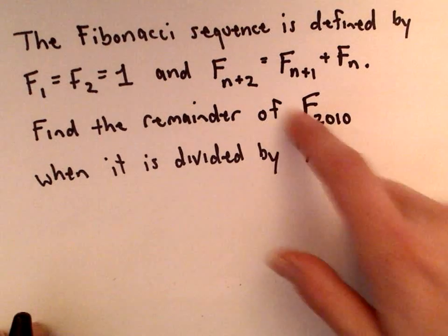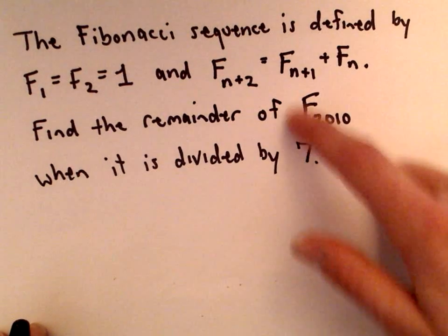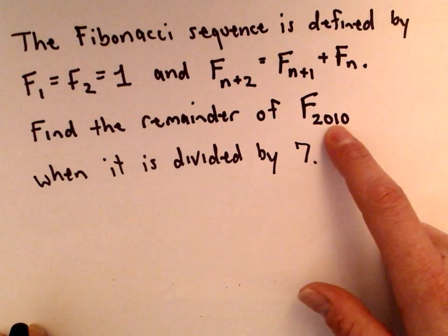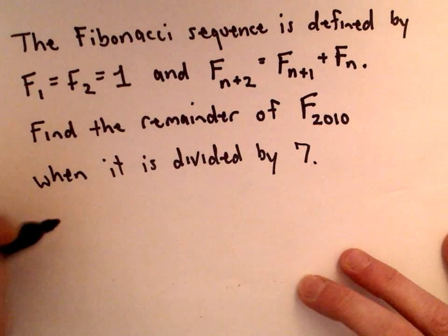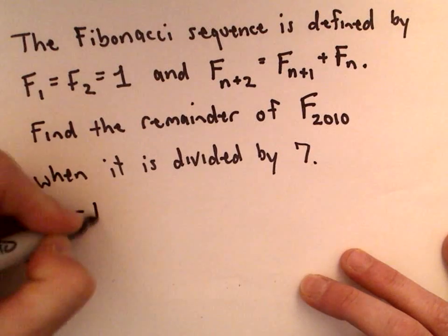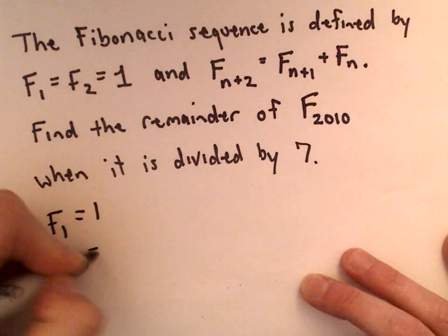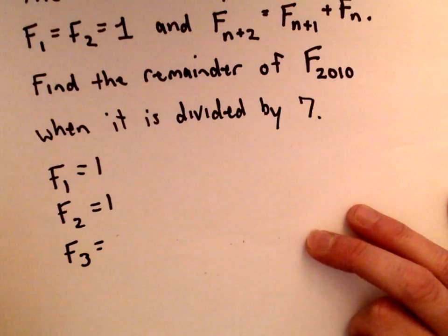Okay, so you want to figure out what is the remainder of that 2010th term when divided by 7. So again, just to remind you, F₁ is 1, F₂ equals 1. To get F₃, we would add the two prior terms.